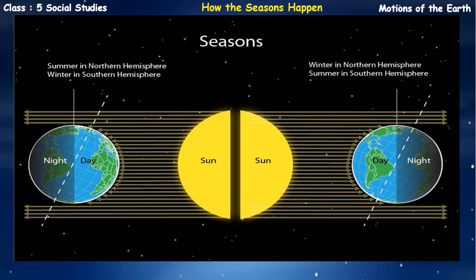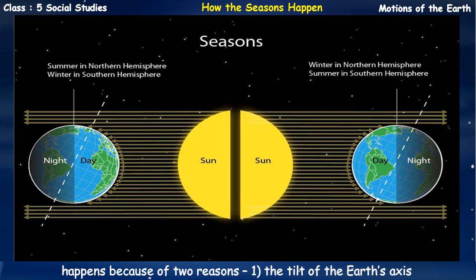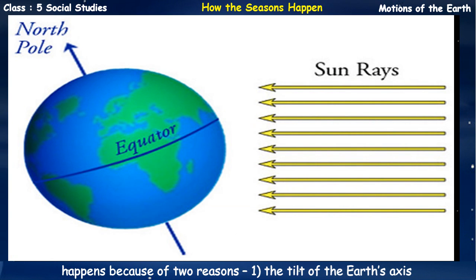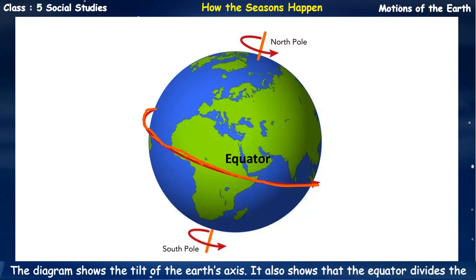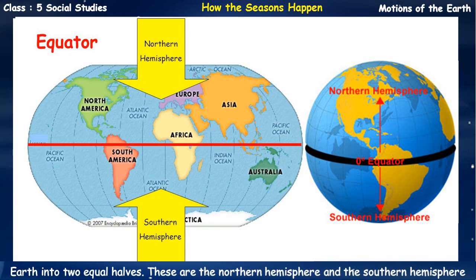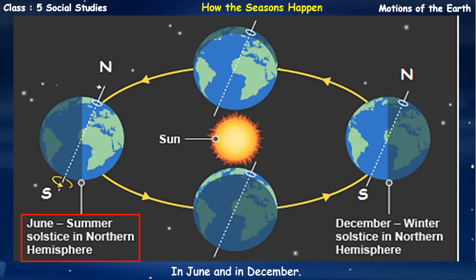Now let's see how the seasons happen. The change in seasons from summer to winter and back happens because of two reasons: the tilt of the Earth's axis, and the orbit of the Earth around the sun. The diagram shows the tilt of the Earth's axis and that the equator divides the Earth into two equal halves – the Northern Hemisphere and the Southern Hemisphere. This drawing shows the orbit of the Earth and the Earth in two positions: in June and in December.